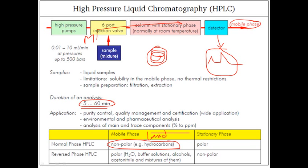The limitations of HPLC include sample solubility — solubility in the mobile phase is a key limitation. There are no thermal restrictions. Sample preparation, filtration, and extraction are required. If the analyte molecules are non-soluble in water and non-soluble in hydrocarbon molecules, they cannot be used in the HPLC system. In normal HPLC, non-polar hydrocarbon molecules are used as the mobile phase and polar molecules as the stationary phase.